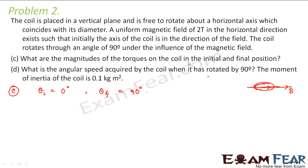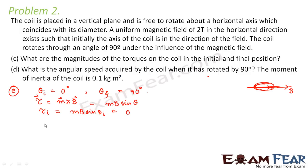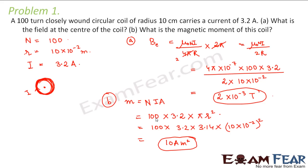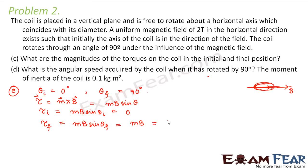We need to find the magnitudes of the torque on the coil in the initial and final positions. Torque is given by M × B, which equals MB sin θ. The initial torque equals MB sin(0°) = 0. The final torque equals MB sin(90°) = MB. The magnetic moment m is 10 ampere meter squared (from the previous question) and B is 2 tesla, so the final torque is 20 N·m.